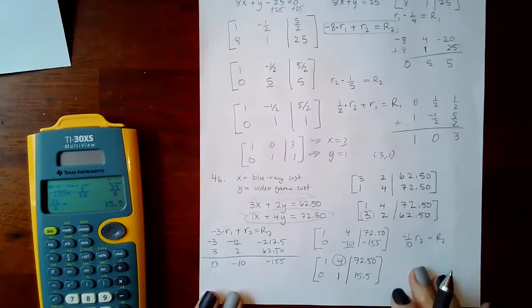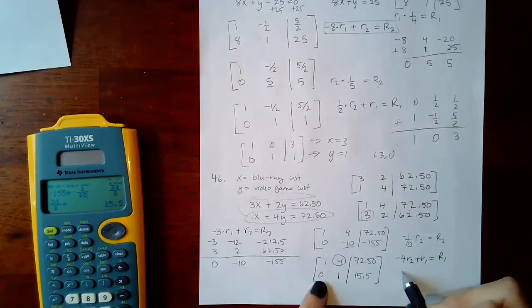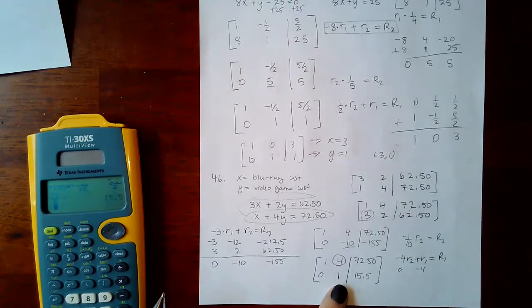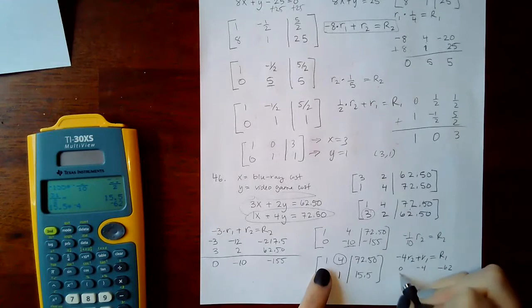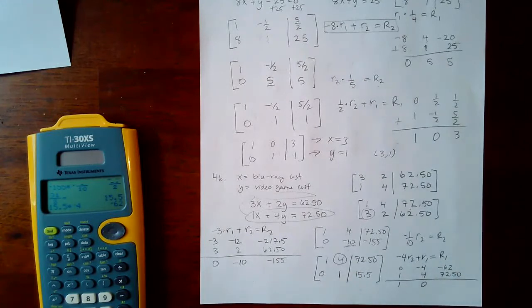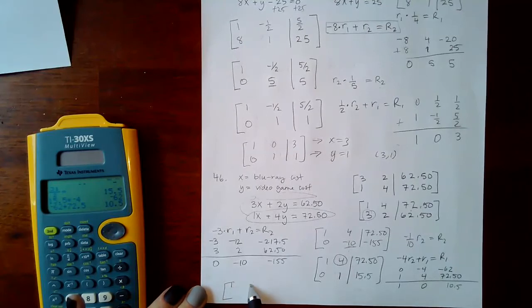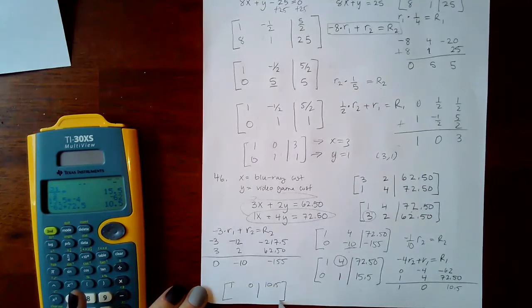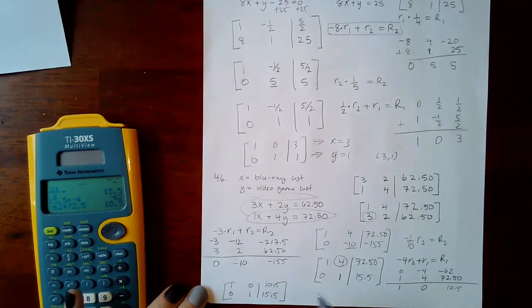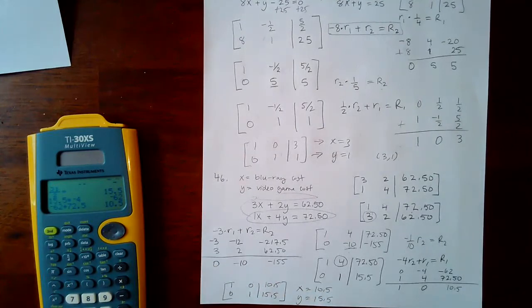Now we're going to use this 1 to change this guy to a 0. So we want to do negative 4 times row 2 plus row 1 to get a new row 1. That means 0, negative 4, 15.50 times negative 4 is negative 62, and then row 1 underneath. This becomes 1, 0, and negative 62 plus 72.50 is 10.50. So my final response is row 1 becomes 1, 0, 10.50, row 2 is the same. So now it tells me that x equals 10.50 and y equals 15.50.